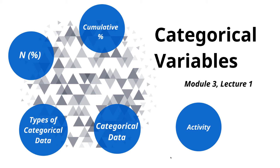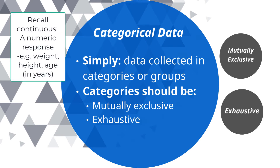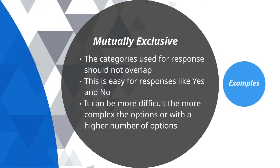Categorical variables collect data in groups or categories. The categories or levels should be mutually exclusive and exhaustive. Unlike continuous data where each response could take a number on a continuum, categories for categorical data are predefined levels that responses fit into. When levels are mutually exclusive, the available responses should not overlap. This is easy for yes/no concepts but can be more difficult with more complex or numerous options.